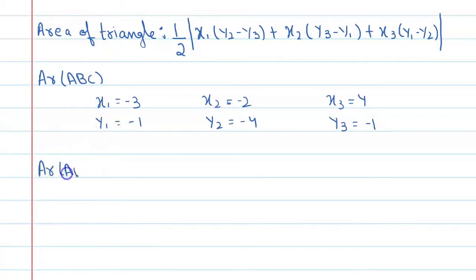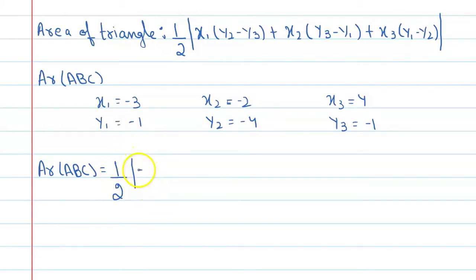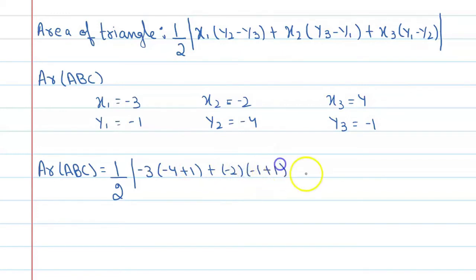Area of triangle ABC = half times modulus of [(-3)(-4 - (-1)) + (-2)((-1) - (-1)) + 4((-1) - (-4))], which gives us: (-3)(-3) + (-2)(0) + 4(3).